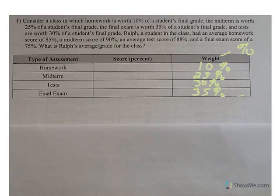Alright, so then we look and it says Ralph, a student in the class, has an average homework score of 85, and a midterm score of 90, an average test score of 88, and a final exam score of 75. So notice that even though they gave me Ralph's grades as percents, I wrote them in here as just scores. And that's what you want. You only want one column to have percents, and it's always the weights.